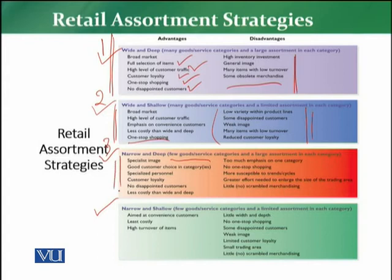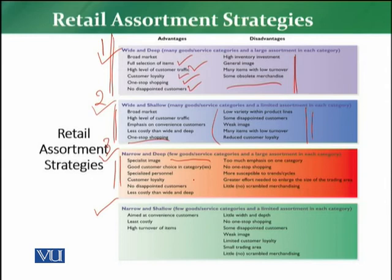The advantages include: such retailers are considered to be specialists in their categories. They offer good customer choice in each category. Specialized personnel are maintained in these stores. Customer loyalty is observed because customers know that although there are few categories, in those categories the retailer is a specialist — offering a lot of variety, many brands, and many products. It is less costly than the wide and deep method because fewer goods and services are offered, though with a large assortment in each category.